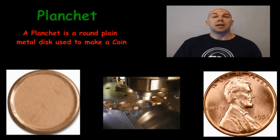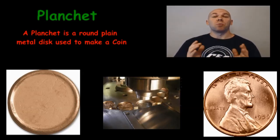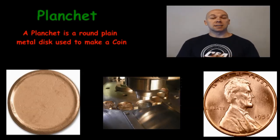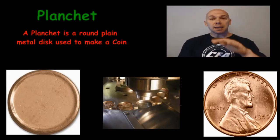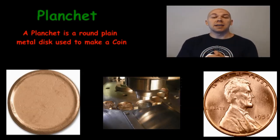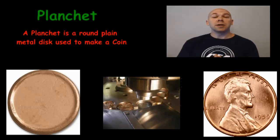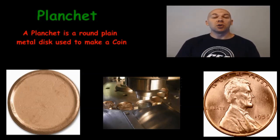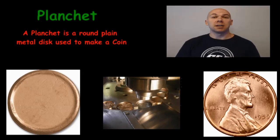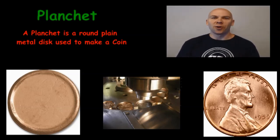Planchet. A blank planchet is a round, plain metal disc that is placed into a die press and struck with the dies we talked about earlier to imprint designs and inscriptions on it, which then transforms that planchet into — yes — a coin.